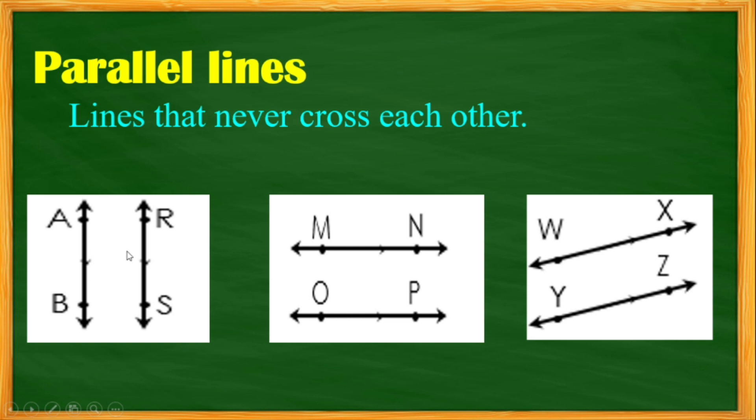Line AB is parallel to line RS. Yes, they never meet to cross each other. This would be an example of parallel lines.